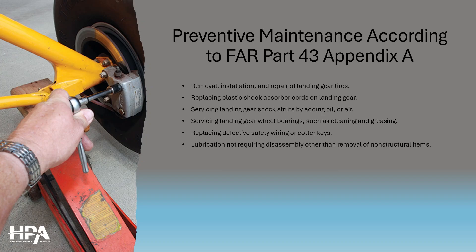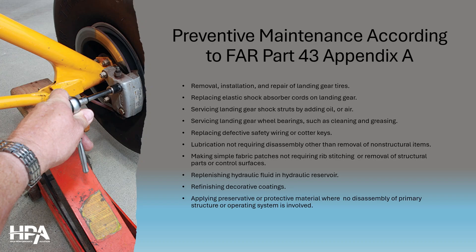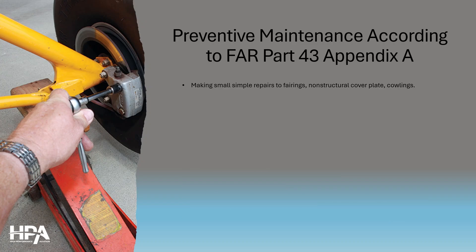Lubrication not requiring disassembly other than removal of non-structural items. Making simple fabric patches not requiring rib stitching or removal of structural parts or control surfaces. You can replenish the hydraulic fluid in the hydraulic reservoir. Refinishing decorative coatings. Applying preservative or protective material where no disassembly of primary structure or operating system is involved. Repairing upholstery and decorative furnishings of the cabin and cockpit. You can make simple repairs to fairings and non-structural cover plates and cowlings.